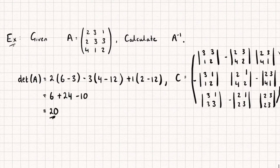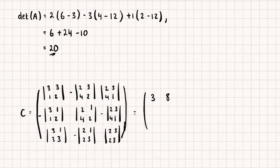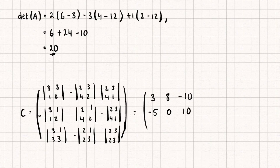Let's now actually calculate this cofactor matrix. So we get: 3 times 2 subtract 3 is 3. 2 times 2 is 4, subtract 12 is negative 8, but we've got that minus sign so it's plus 8. 2 times 1 is 2, subtract 3 times 4 which is 12, so we get negative 10. Then 3 times 2 is 6, subtract 1 is 5, so minus 5. 2 times 2 is 4, subtract 4 is 0. 2 times 1 is 2, subtract 12 is negative 10, but it's negative so plus 10. Then 9 subtract 3 is 6. 2 times 3 is 6, subtract 4 is negative 4. And 2 times 3 is 6, subtract 6, so we get 0. That's our cofactor matrix.